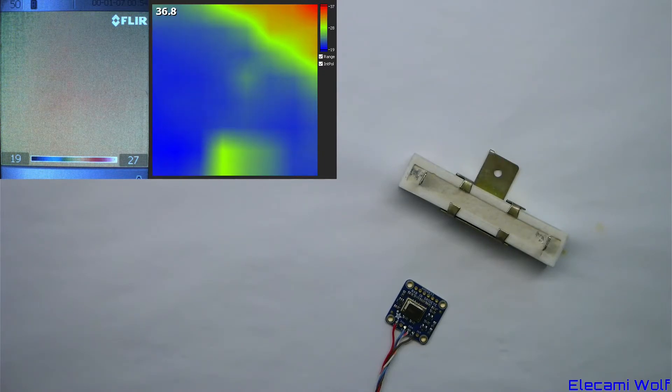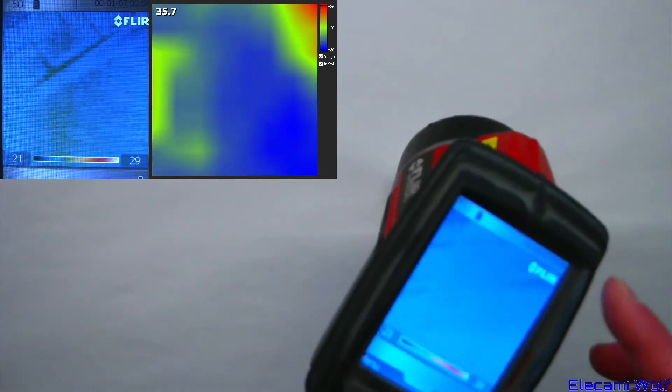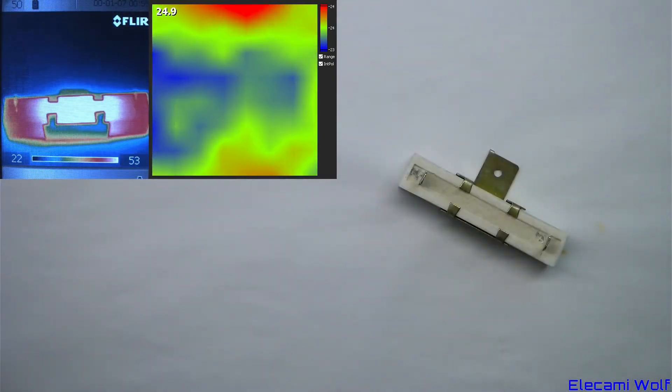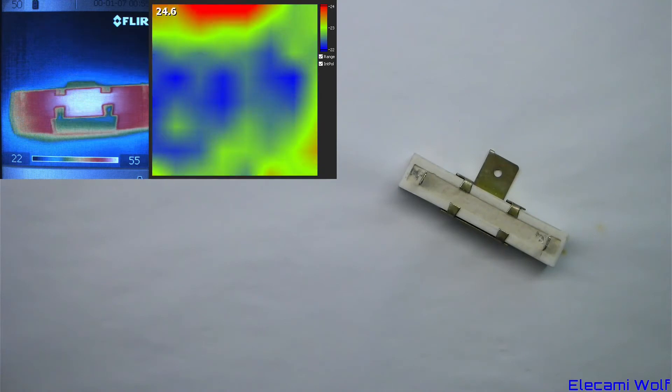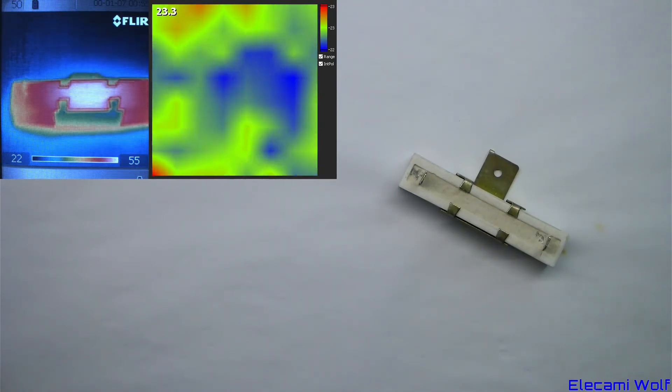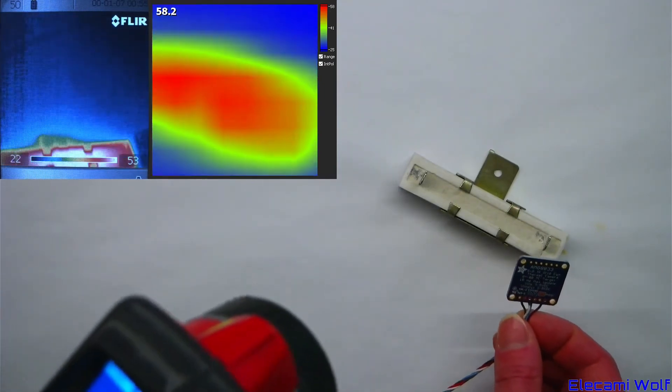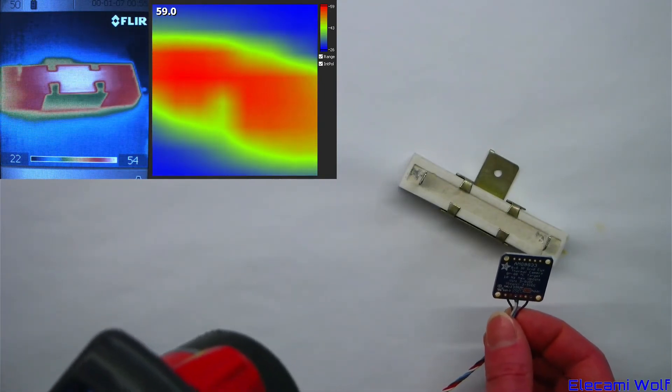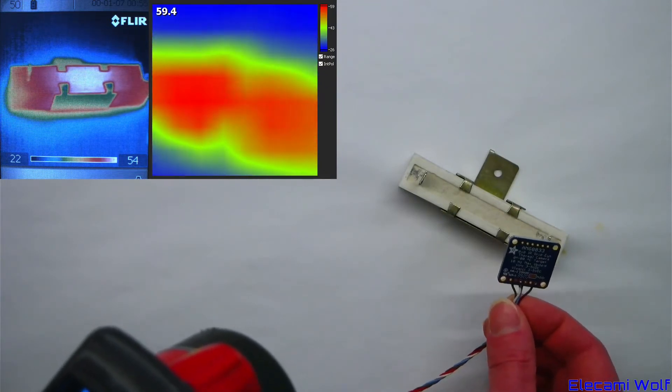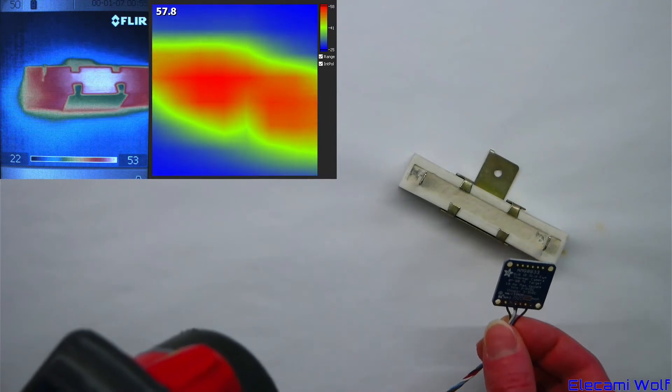Let's explore the capabilities of the GridEye sensor with comparison to this real thermal camera. I've got a power resistor here, which was recently turned on. It's showing around 55. GridEye is showing a bit hotter, but it's comparable.